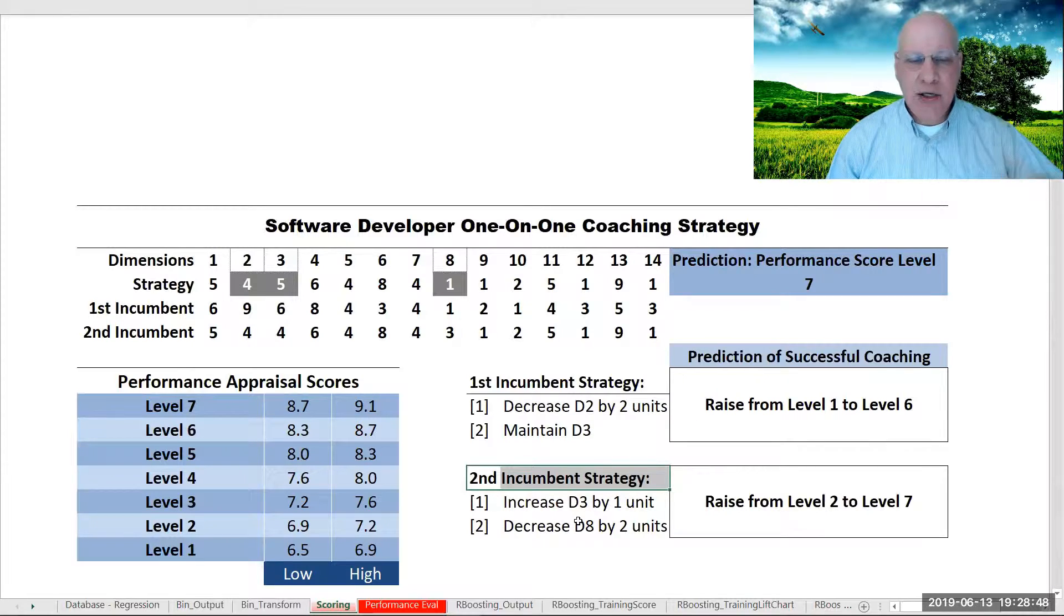The algorithm that was built is so accurate that out of the whole group, it only miscategorized one of the incumbents, and the misclassification was by just one level. All the rest were dead on.